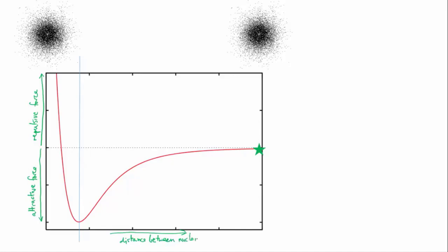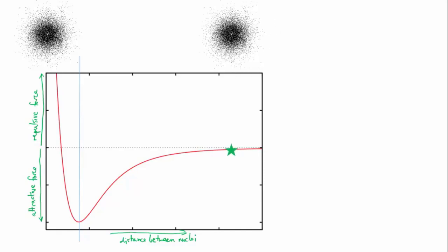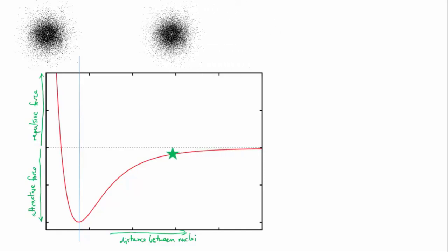If we start with two atoms a long way away, they don't feel each other. Their electrostatic fields aren't interacting, and the force between them is at zero. If we bring them closer, the nucleus of each atom starts to interact with the electric field from the electrons of the other atom. A slight attraction is experienced. This pulls the atoms in closer, and the attraction grows.